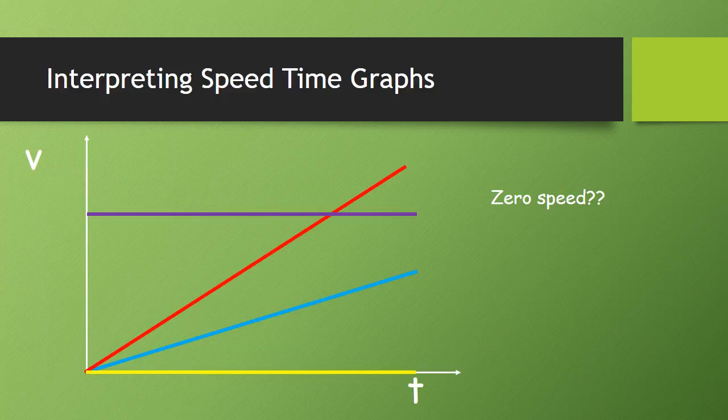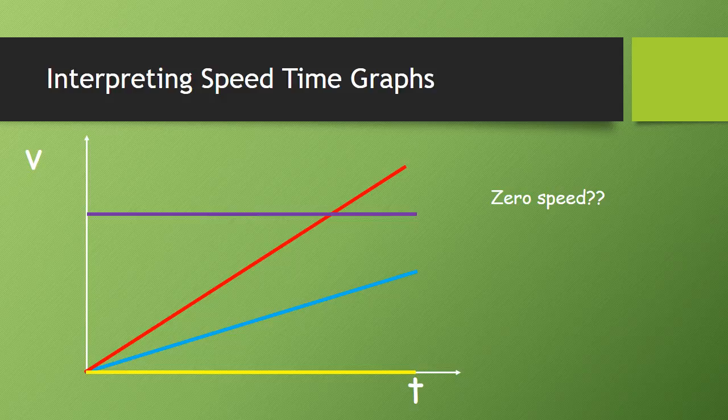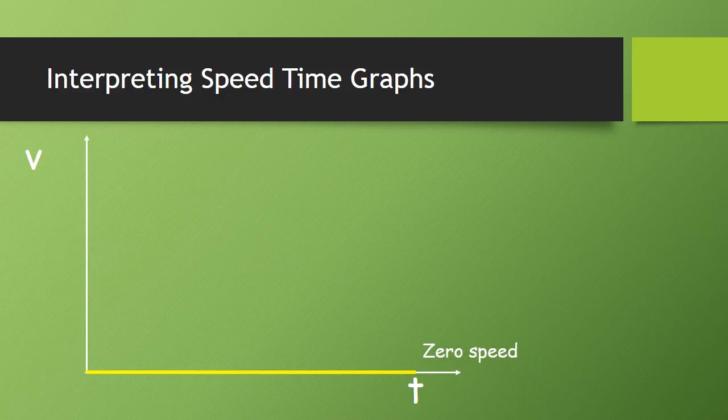Now I've got a speed time graph with several colored lines on it, and I want you to work out which line shows zero speed. That's right, hopefully you got it. It's the yellow line, because it's right at the zero point on the speed axis.